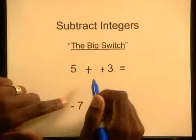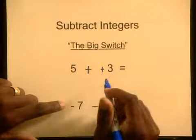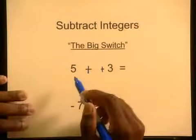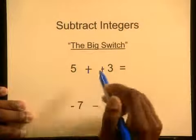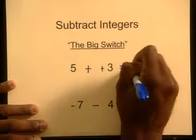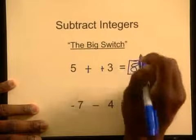So in this case, we have five minus negative three, which was confusing. After the big switch, it is just five plus three, which gives us eight. You got it — eight is the answer.